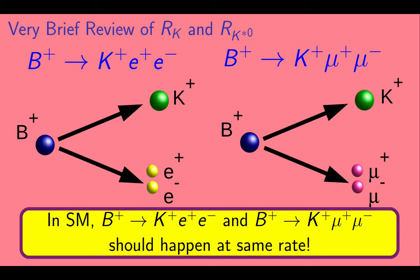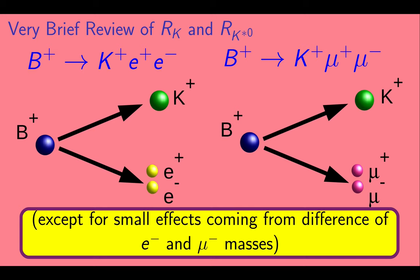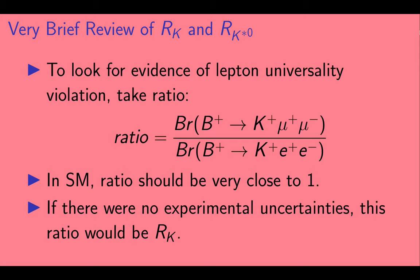So in the standard model, these two decays should happen at the same rate, except for small effects coming from the difference of the electron and muon masses. To look for evidence of lepton universality violation, we can look at the ratio of two branching fractions.